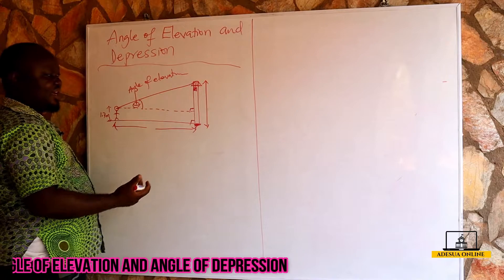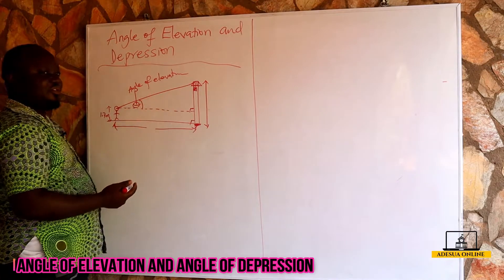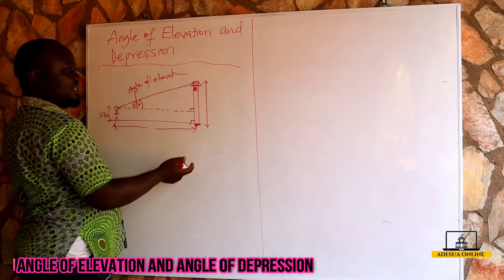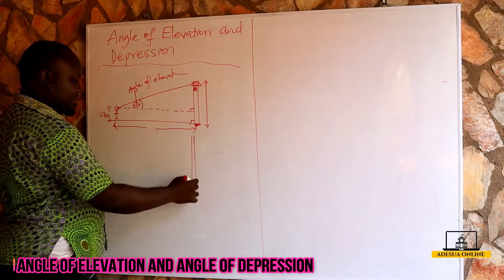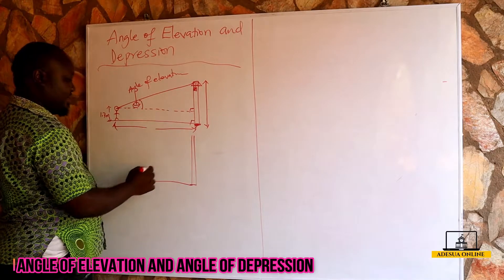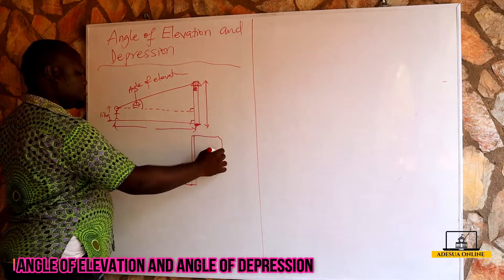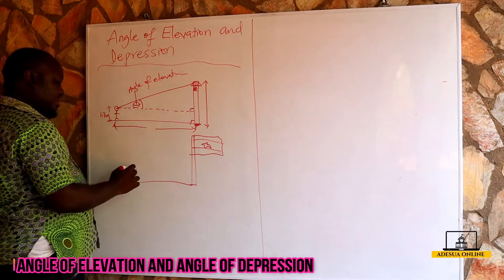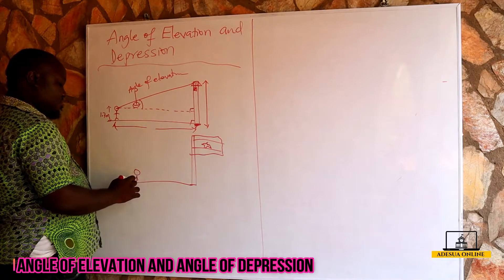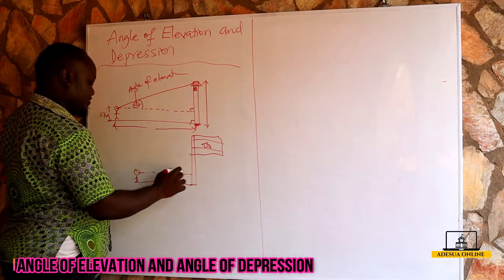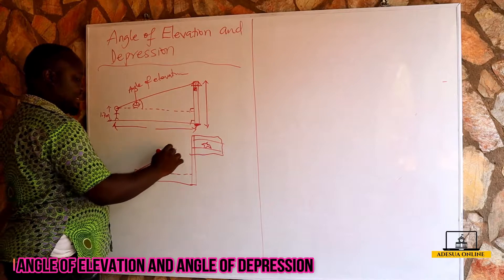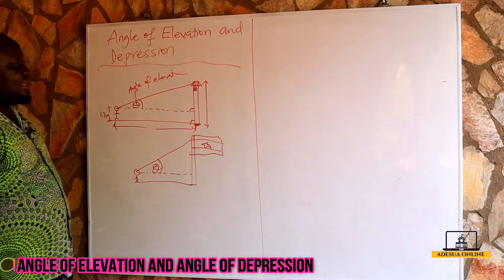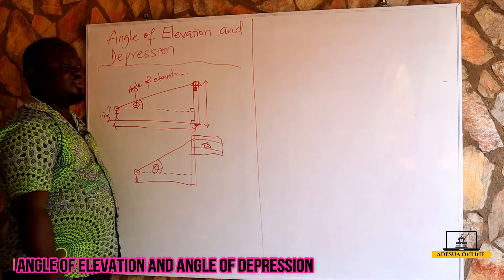So this is the explanation for angle of elevation — we are on level ground and there is a building or maybe a flag, like a Ghana flag somewhere. Coffee is watching the flag; his height is always considered. That angle between his eye level and the flag is the angle of elevation. Now let's talk about the angle of depression.